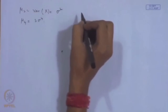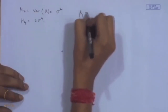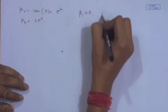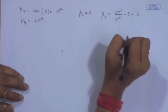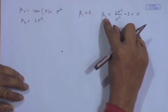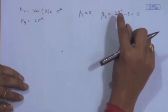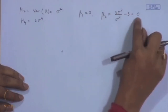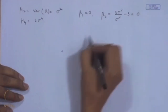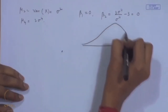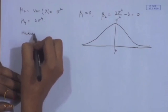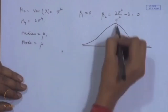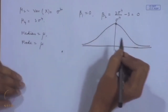We can also calculate μ₄ = 3σ⁴. Since all odd central moments are zero, β₁ = 0, meaning the distribution is symmetric. And β₂ = μ₄/μ₂² − 3 = 3σ⁴/σ⁴ − 3 = 0, defining the normal peak as the reference for kurtosis. When plotted, the distribution is a symmetric bell curve around μ, where the mean, median, and mode all equal μ.